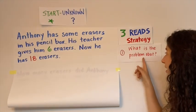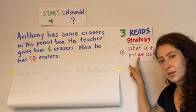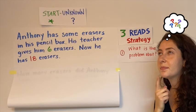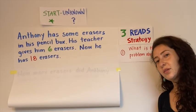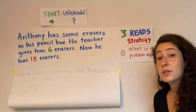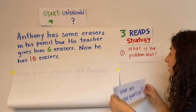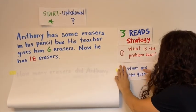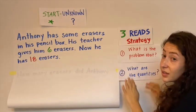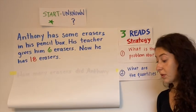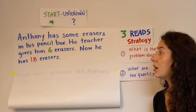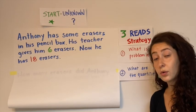Now the next read, do you remember what the second read is? Think about it. Yes, if you said the second read is about the quantities or the numbers, you are correct. The second read is what are the quantities or numbers in this problem. So let's look over the problem and I'm going to underline or circle the quantities.